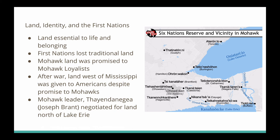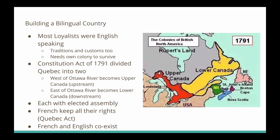All of this leads to building a bilingual country. Most Loyalists from the 13 colonies were English speaking, with their own traditions and customs. To preserve that, they needed their own colony. So in 1791, the Constitution Act divided Quebec into two: west of the Ottawa River became Upper Canada — not upper class, but upstream on the river — and east of the Ottawa River, being downstream, became Lower Canada. Upper Canada was English speaking; Lower Canada was French speaking.